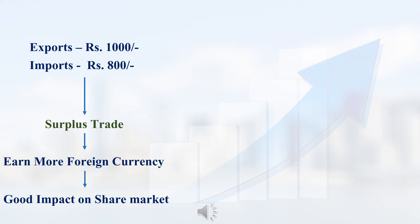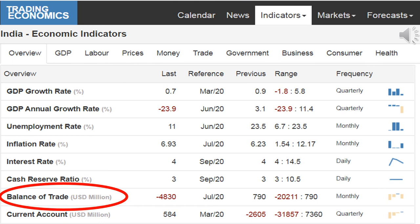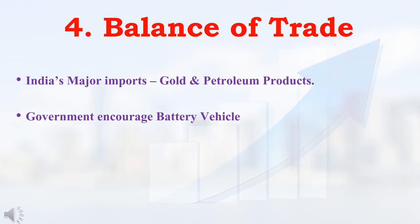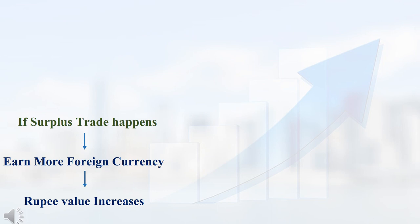In India, if exports increase and surplus trade happens, then only we can earn more and more foreign currency — this will have a positive impact on the share market. In the Trading Economics website, we are able to collect this balance of trade data. Recently due to the coronavirus situation, our imports had reduced, so in this quarter balance of trade was in positive. Otherwise, normally in India when compared to exports, imports are higher, so balance of trade was in negative. In India, mainly we are importing gold and petroleum products. The Indian government is recently giving more importance to battery vehicles — if battery vehicles get success on the road, then our petroleum product imports will reduce, so there is a chance our balance of trade may become surplus.